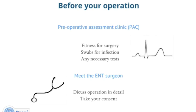What will happen before the operation? You will be asked to attend a pre-operative assessment clinic before your surgery to assess your fitness for anaesthetic and surgery. Here we do some swabs checking for infection and request any necessary tests, for example an x-ray, ECG or blood tests. The ENT surgeon will discuss the operation with you in detail, including risks and benefits, and you will be asked to sign a consent form. You will be given antibiotic drops and possibly capsules or tablets to keep germs away during healing, and asked to wash any stickiness from the eye gently with cotton wool and cooled boiled water.